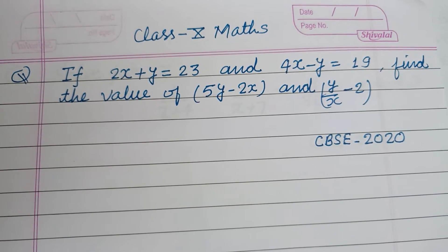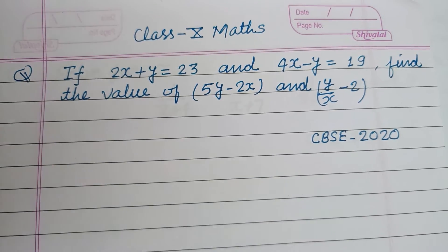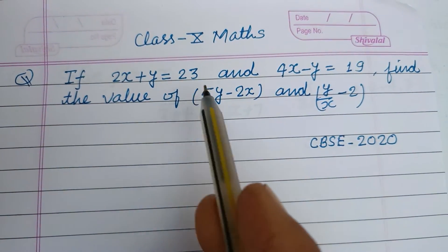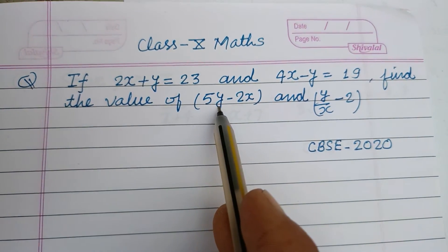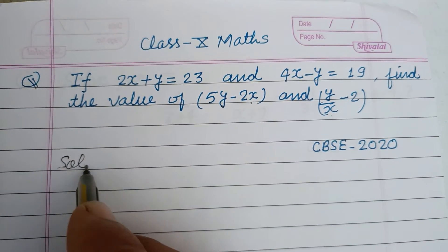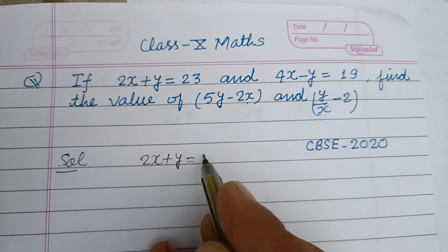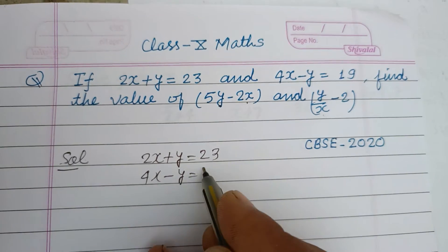Hello viewers, warm welcome to this YouTube channel. Question from CBSE board exam 2020: If 2x + y = 23 and 4x - y = 19, find the value of 5y - 2x and y/x - 2. The given equations are 2x + y = 23 and 4x - y = 19.